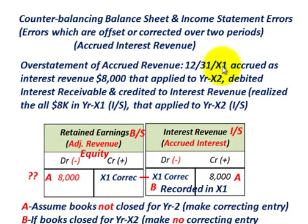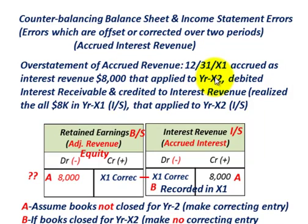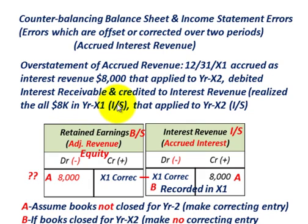In year X1, accrued interest revenue was recorded at $8,000, but that $8,000 actually applied to interest revenue that was supposed to be earned or realized in year X2. At that time, we debited interest receivable in year X1 and credited interest revenue — realizing all $8,000 on the income statement in year X1, when it really should have been applied to year X2.